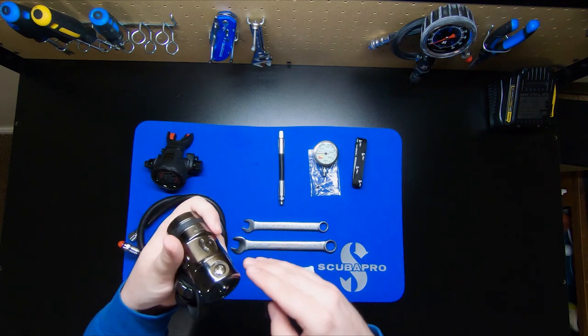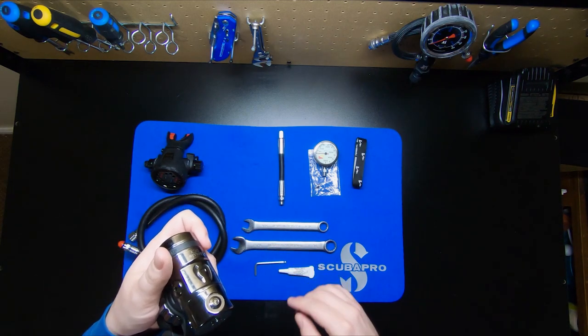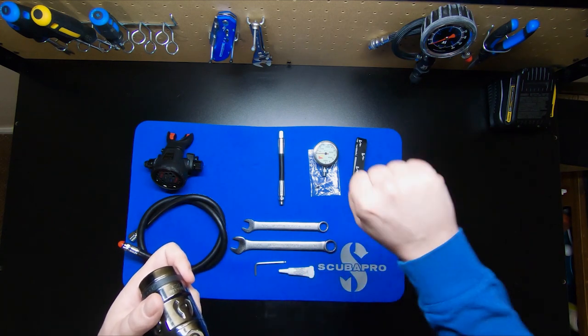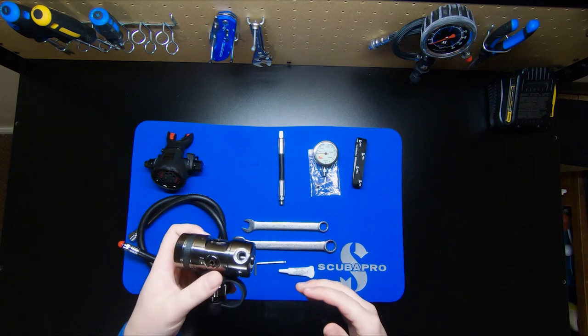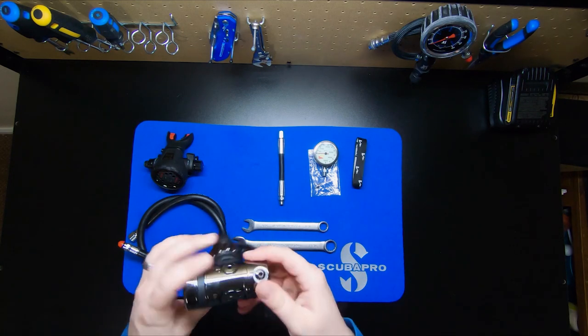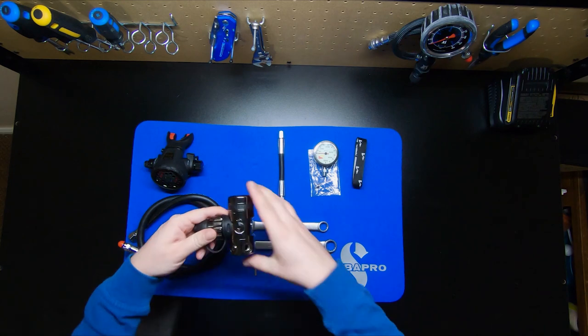This particular first stage happens to have a pivot as well. A pivot is really nice because it allows you to stow your hose on your stage bottle nice and streamlined when you're not using it. But then when you go to deploy it, you just pull out the hose, bend it up. This pivot is going to rotate with the regulator and it's going to help cut down on jaw fatigue and make it very easy for you to breathe from your regulator.